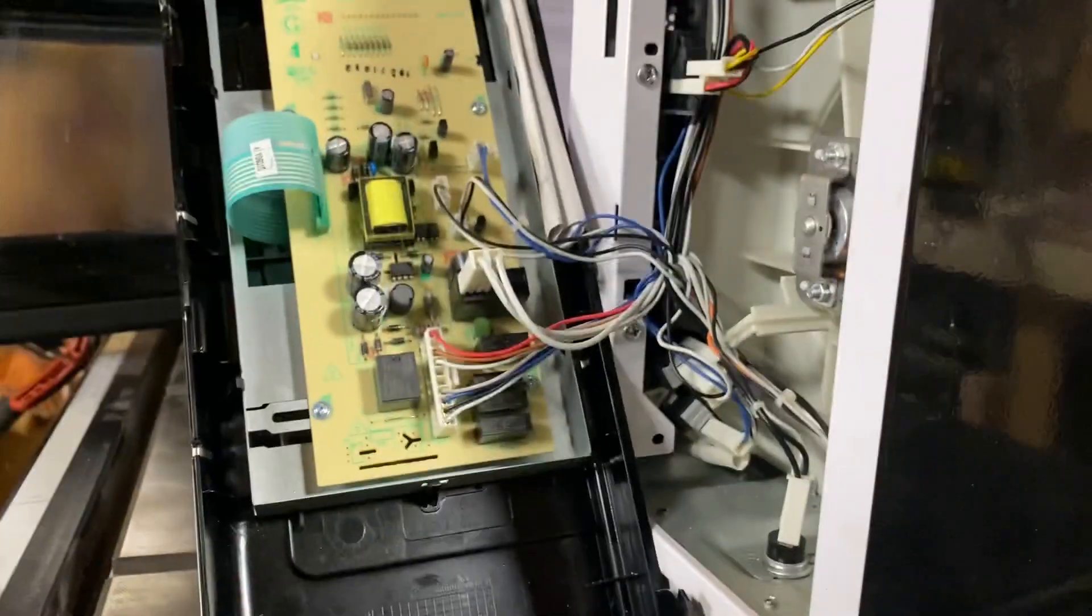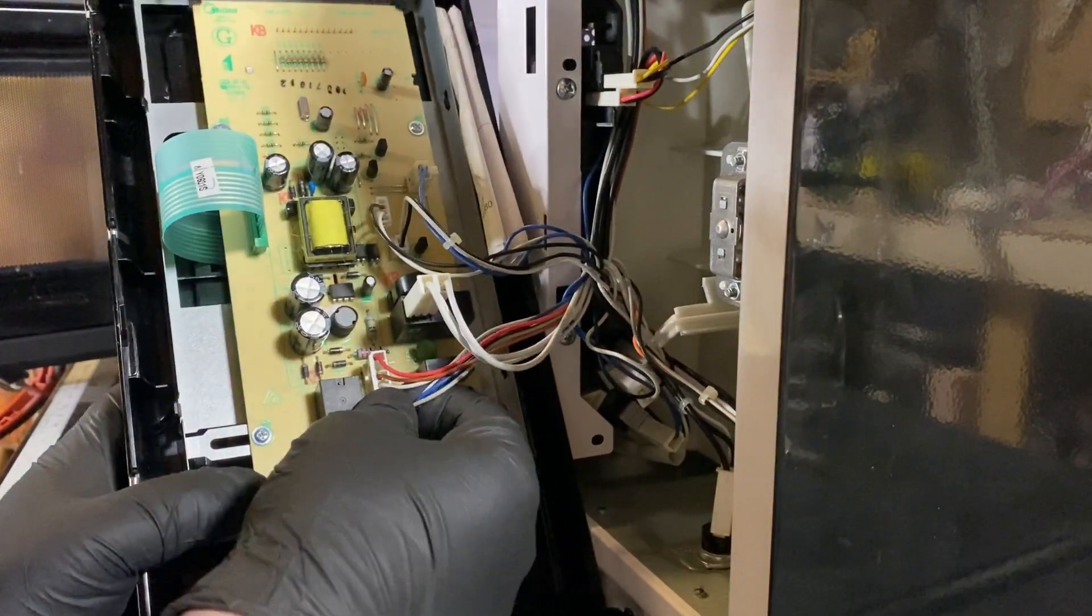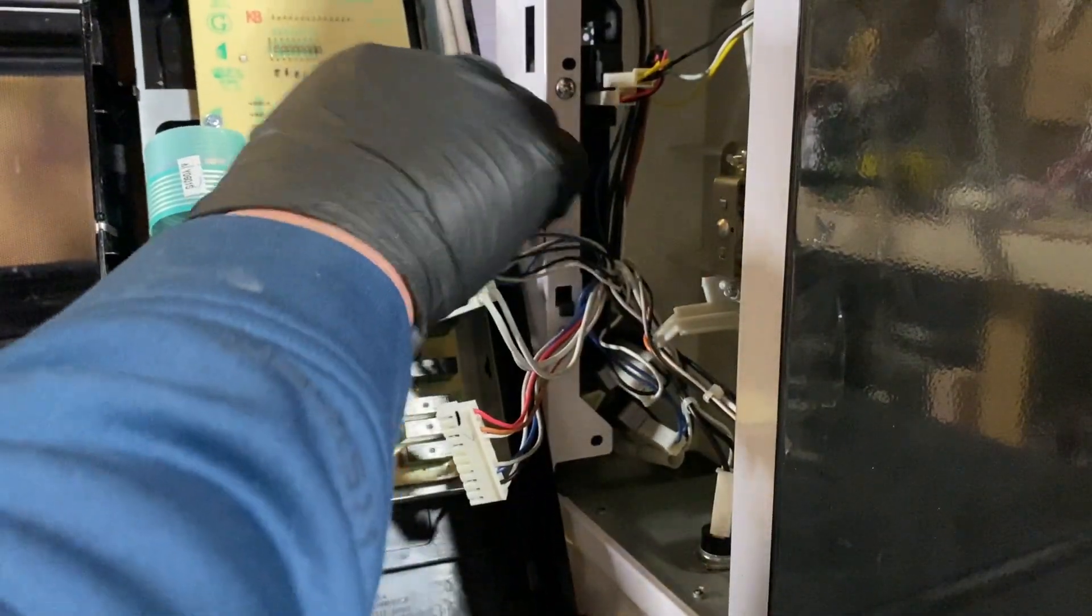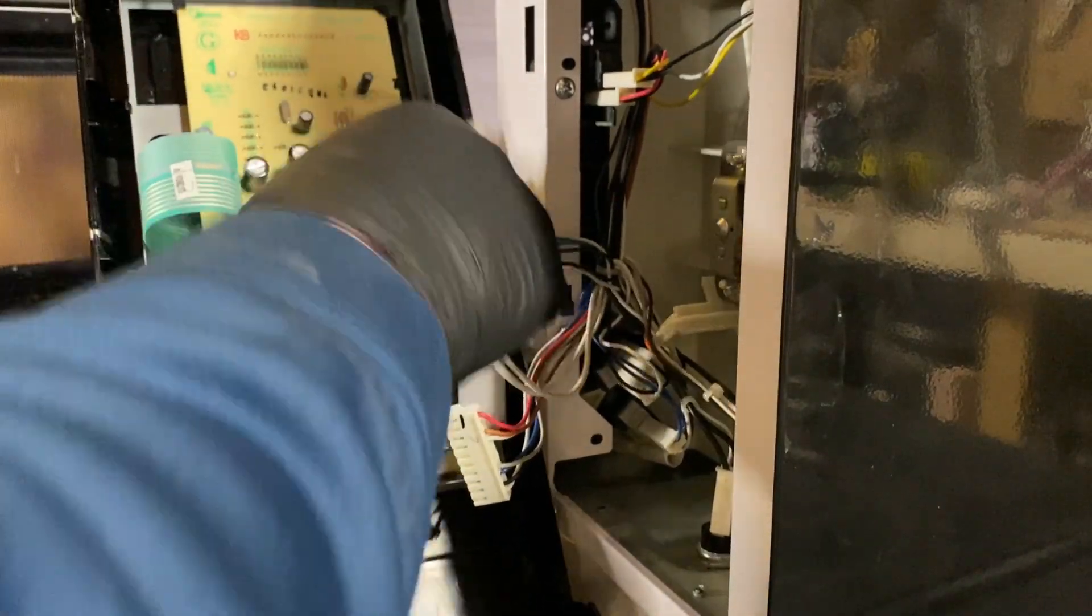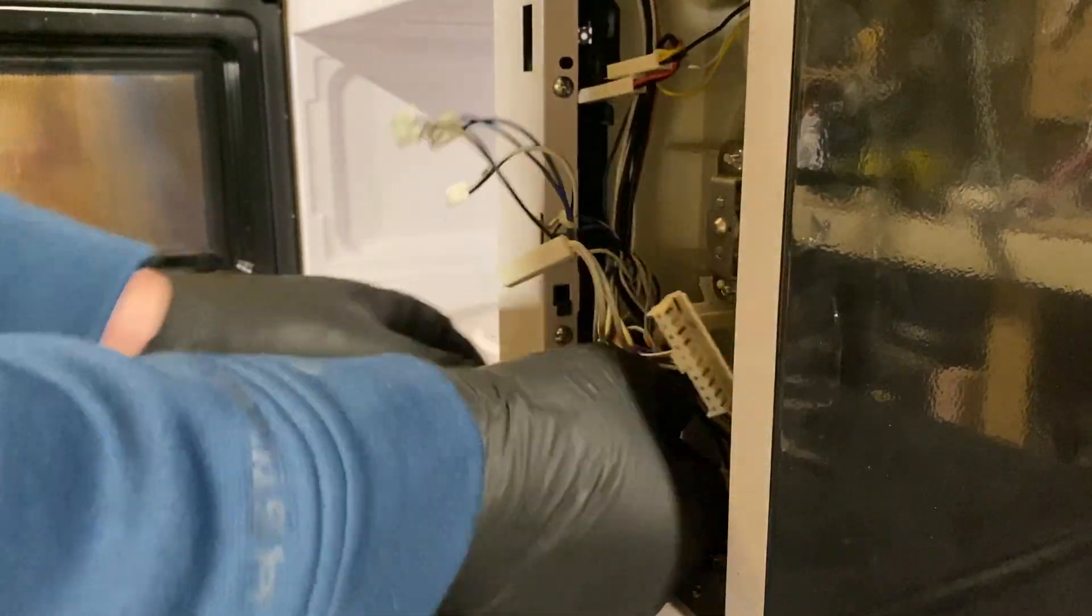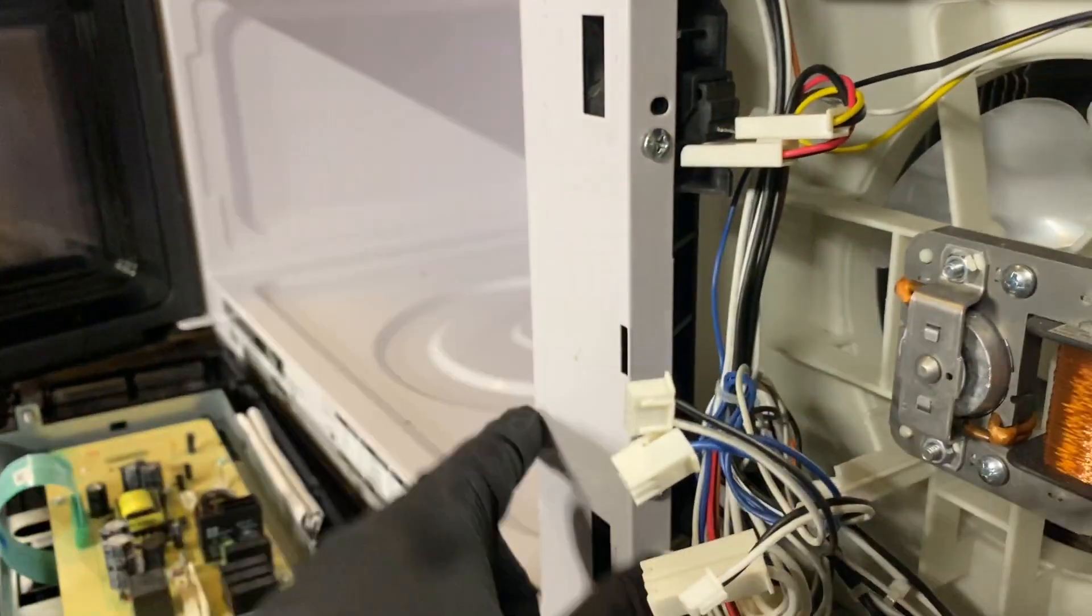So to do that, we're gonna get these wires out of the way first. Some of them have little clips that you just press on and lift out, some of them you just pull off. Now that we got that out of the way, same with these - these are switches that we're looking into. Now to get this piece off, there's two little screws in here on the door. See that right here and down there. We got to take that off.